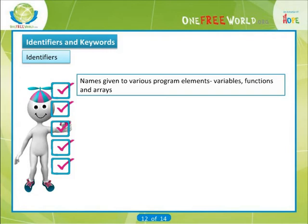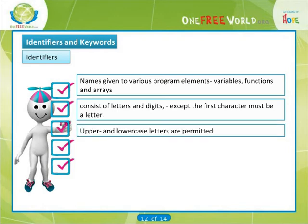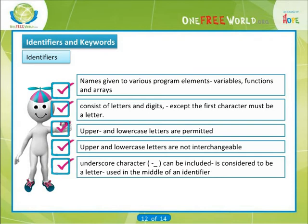Identifiers and keywords. Identifiers are names that are given to various program elements such as variables, functions and arrays. Identifiers consist of letters and digits in any order, except that the first character must be a letter. Both upper and lowercase letters are permitted, though common usage favors the use of lowercase letters for most types of identifiers. Upper and lowercase letters are not interchangeable — that is, an uppercase letter is not equivalent to the corresponding lowercase letter. The underscore character can also be included and is considered to be a letter. An underscore is often used in the middle of an identifier. An identifier may also begin with an underscore, though this is rarely done in practice.